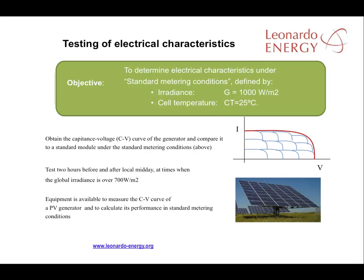Nowadays there's a lot of equipment that can help you obtain this curve and translate it into standard conditions. This test has to be done two hours before and after local midday. Before the test is carried out, the global irradiance has to be at least 700 watts per meter squared.